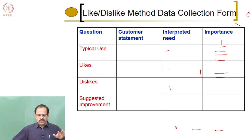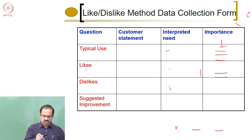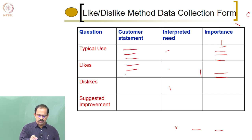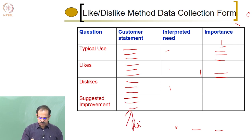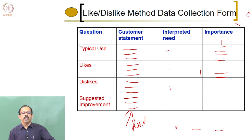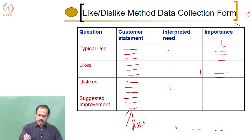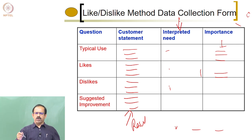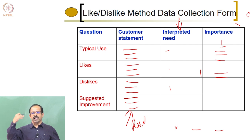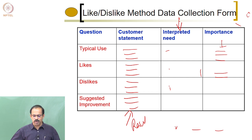This is the format: questions covering typical use, customer statements, likes, dislikes, and suggested improvements. The customer gives you all this information, you note it down. This is known as the raw information you get from the customer. You then interpret the needs the customer is asking for and give importance to each — noting whether it is really needed or optional. This kind of information you get from the customer through the like-dislike method of data collection.